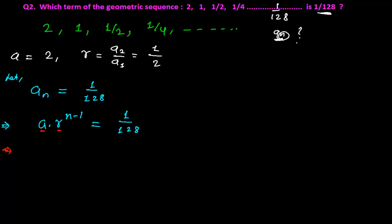First term is 2, and then the common ratio is 1/2, so let me put the values: 2 times (1/2)^(n-1) equals 1/128. Again, now see here (1/2)^(n-1)—here 2 is multiplying this part.